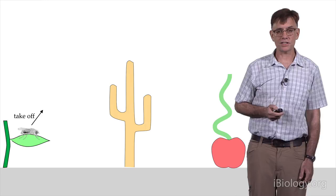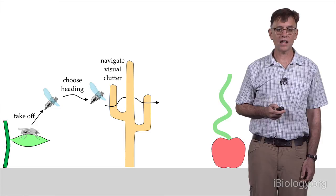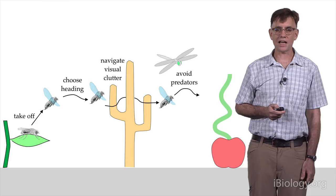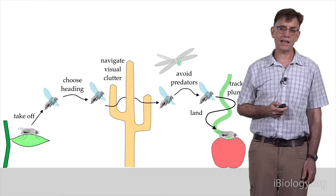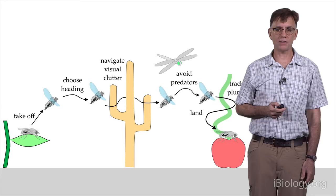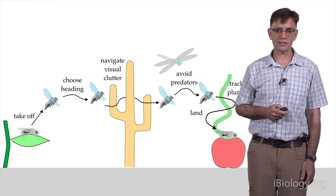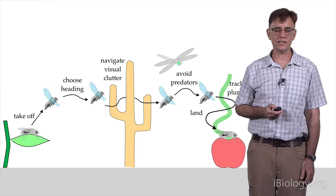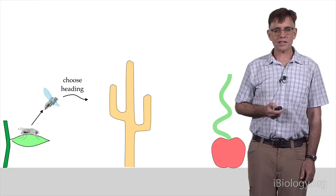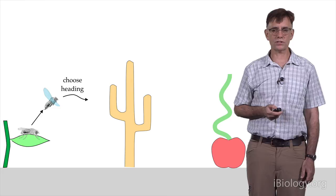If you imagine a more cartoon form, everything a fruit fly needs to do to get from the release site to the capture site, you begin to get a sense of all the things that flight control is necessary for. A fly has to take off. A fly has to choose a heading so it doesn't just circle aimlessly in the desert. A fly has to navigate visual clutter. It doesn't want to crash into things. It has to avoid getting eaten by the big, nasty predators that are out there. And it has to find odor plumes, because the odor plumes are really the only hope it has of finding a nice place to land, to eat and perhaps find some of its conspecifics, where it continue its life history through mating and all that other good stuff. So let's consider just some of these in the context of flight control.